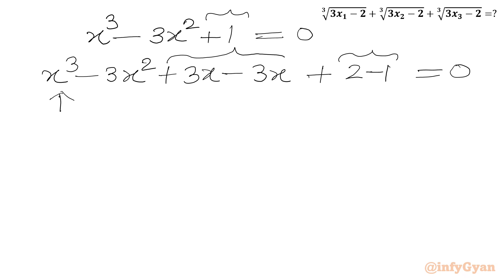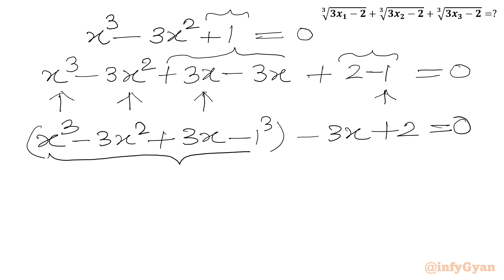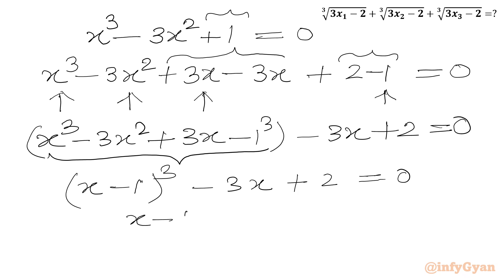Now I will group x³ - 3x² + 3x - 1 in one bracket, which equals (x - 1)³ by the algebraic identity (a - b)³. Then we have -3x + 2 remaining, giving (x - 1)³ - 3x + 2 = 0, or equivalently (x - 1)³ = 3x - 2.